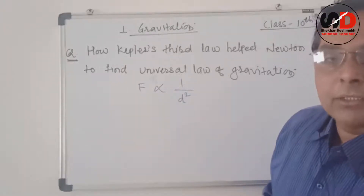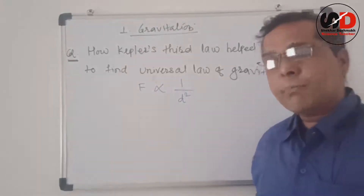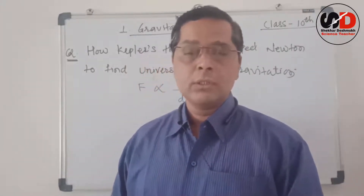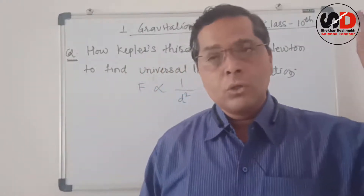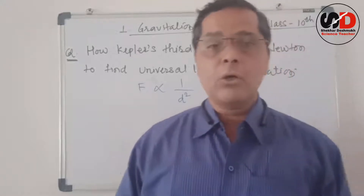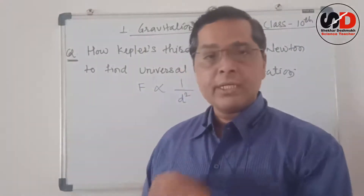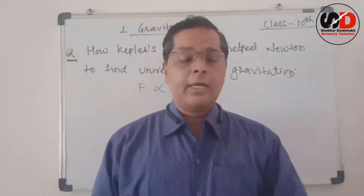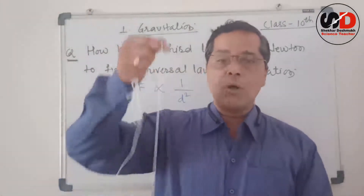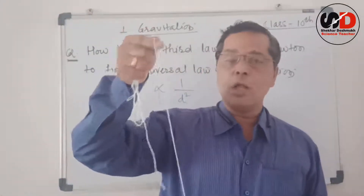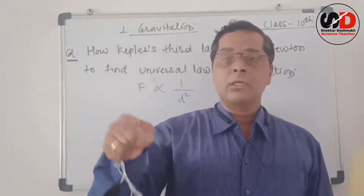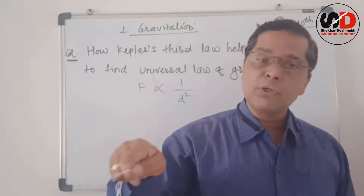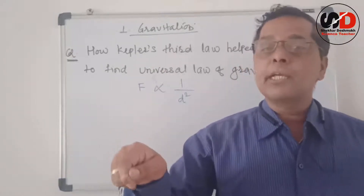To understand how Newton assumed the inverse square dependence on distance, we must first recall our previous knowledge of circular motion and centripetal force. Here I have a small ball. What we see here is rotational motion — that is, circular motion. If the object is moving in a circular path, it is called circular motion.